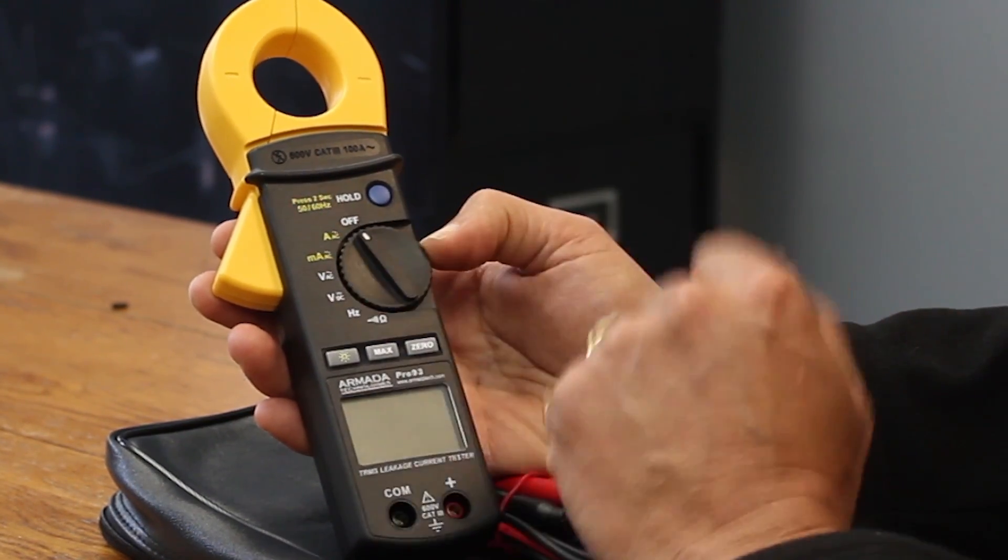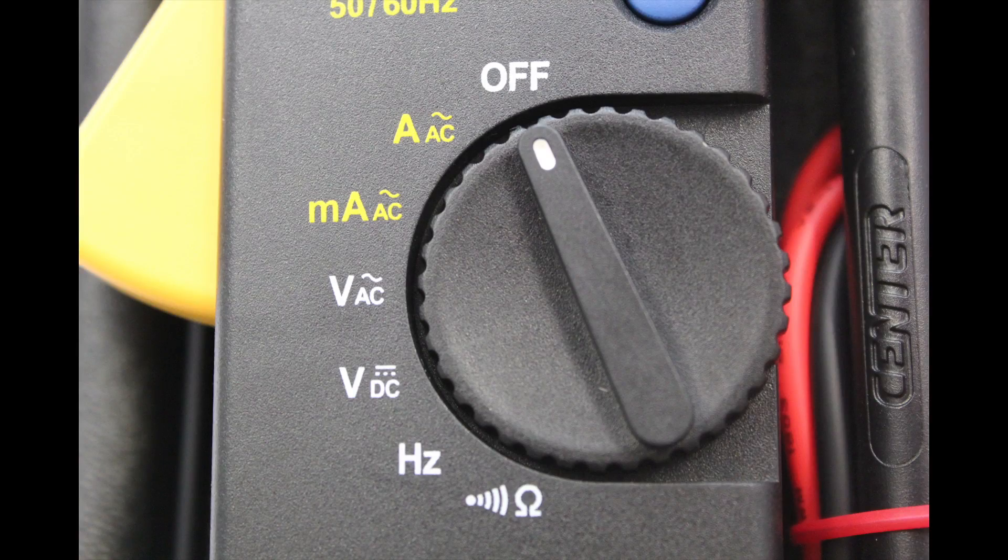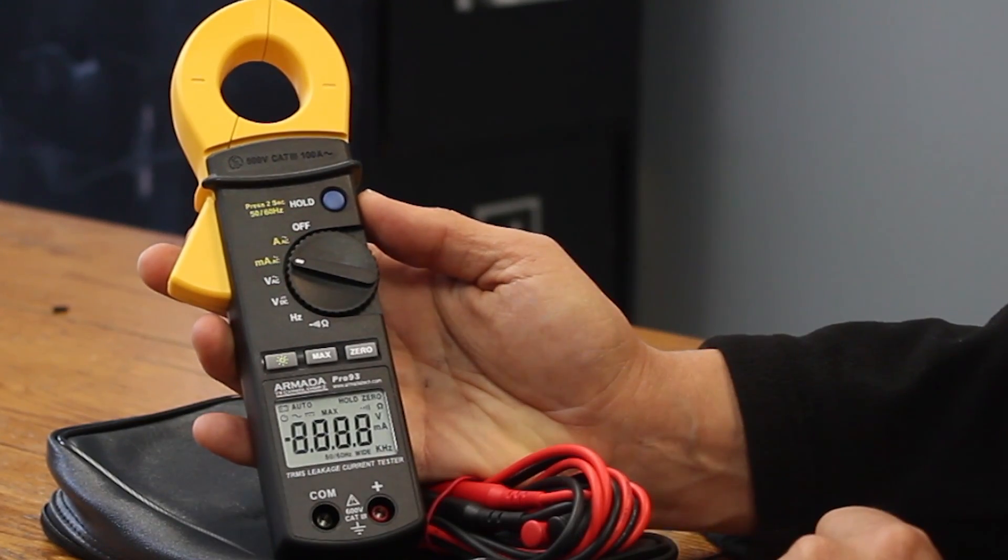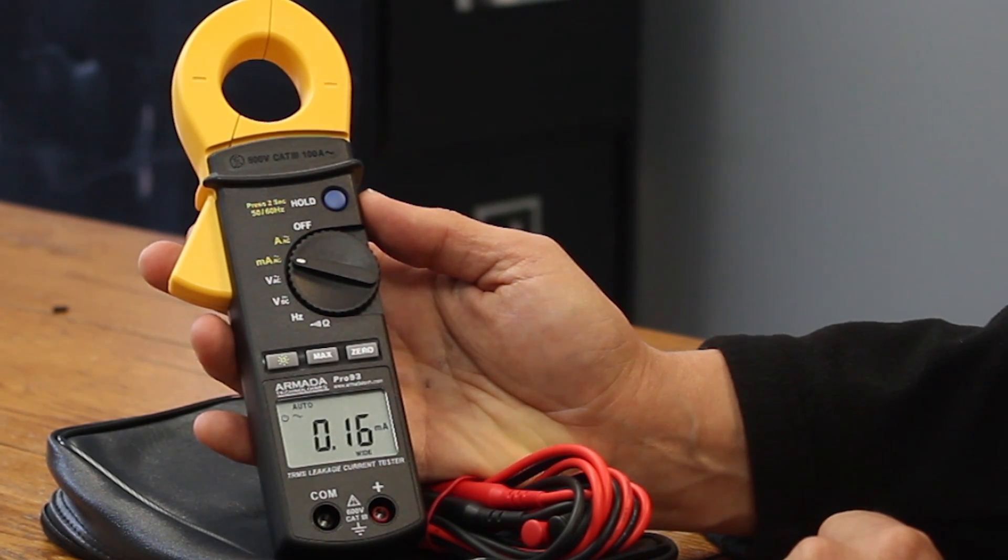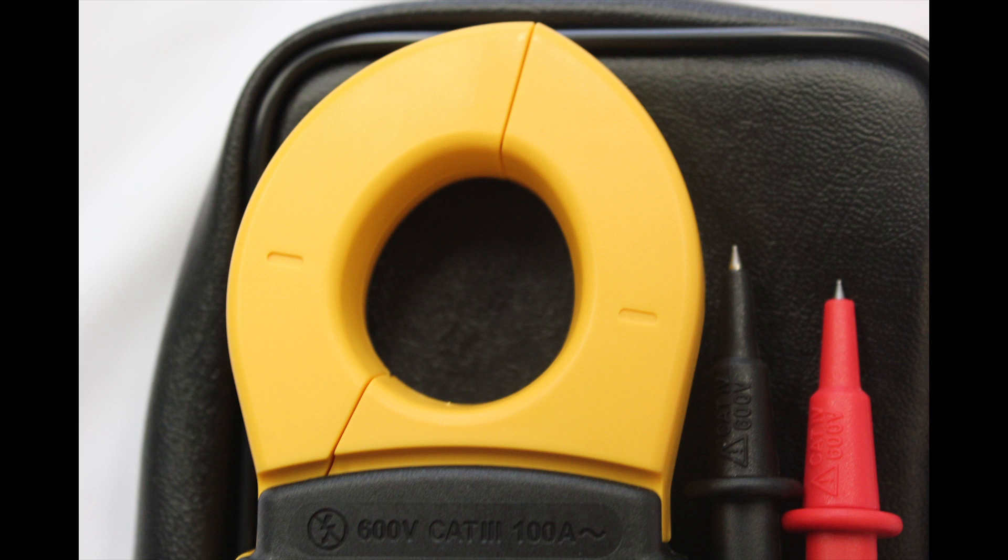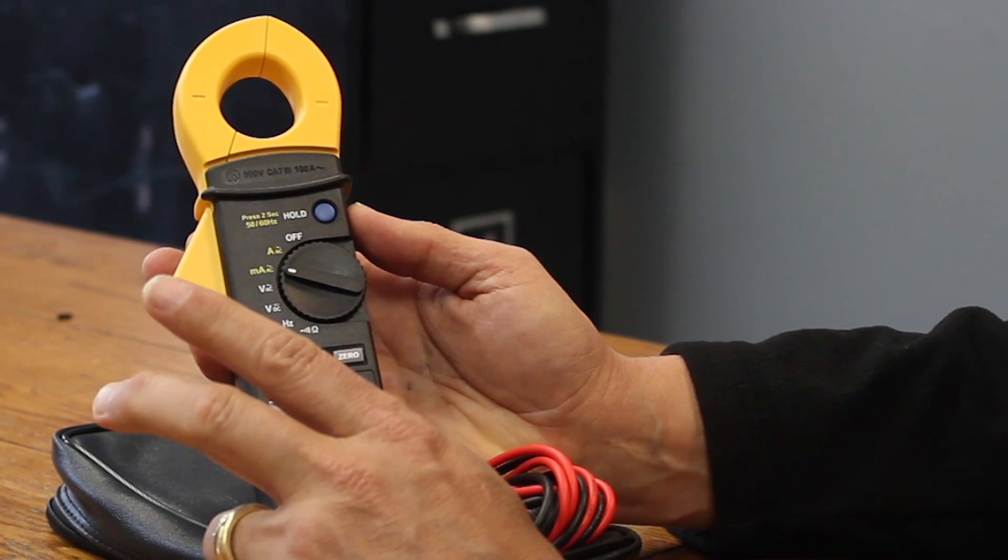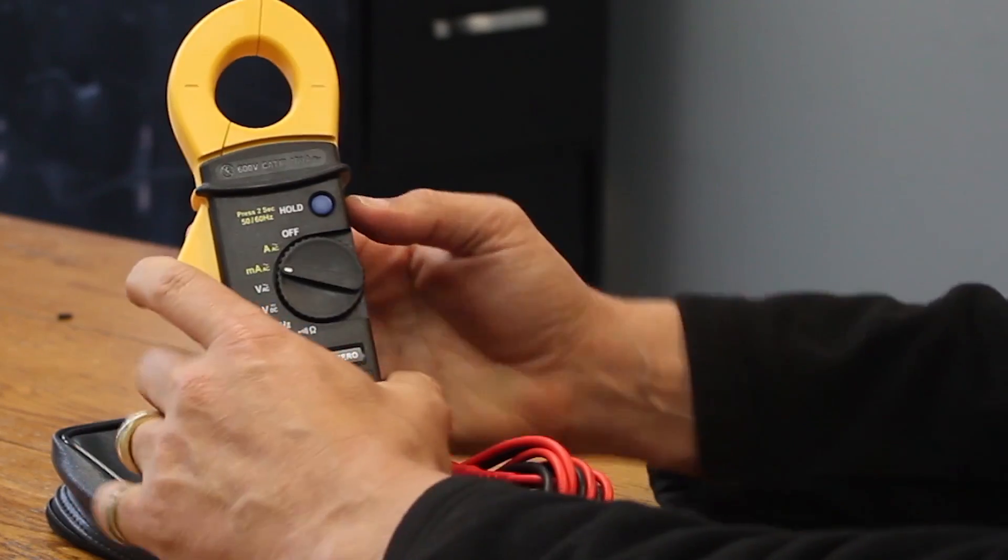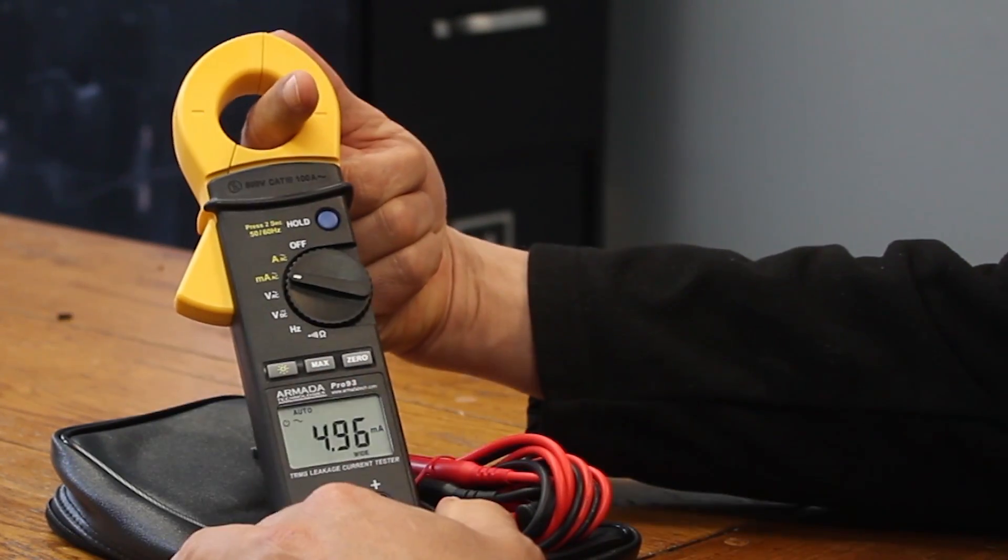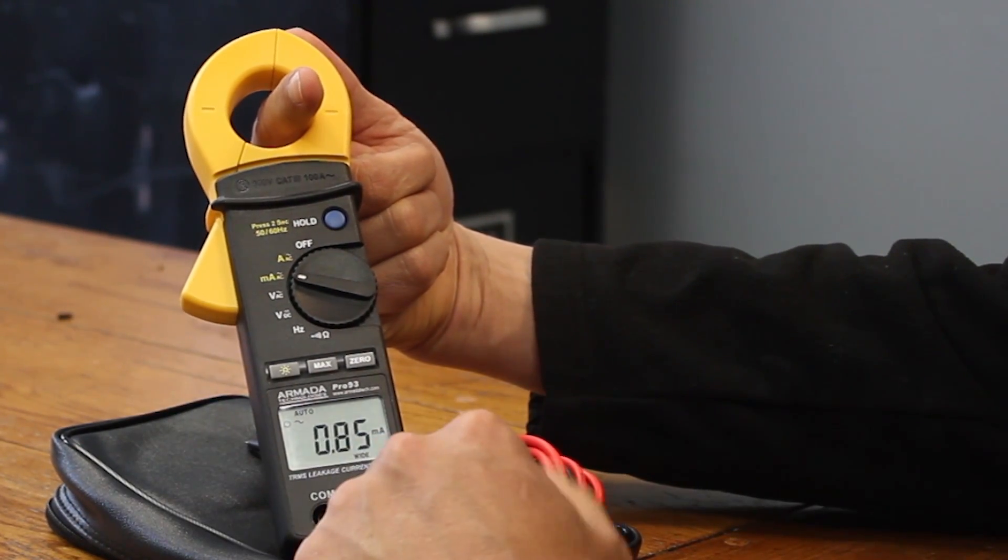On this unit, the milliamp capability is shown by the MA. When I move the dial to the MA position, it's ready to measure milliamps. The way you measure milliamps is through the clamp portion. You take one wire, not two, but one wire of the system, and put it through that clamp. It will give you a reading of what your milliamps are.